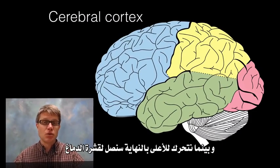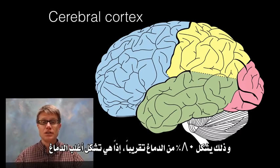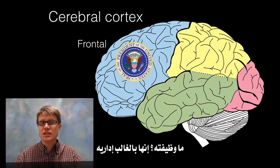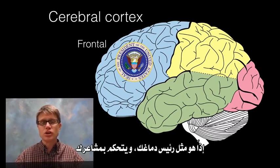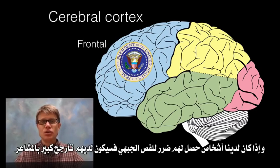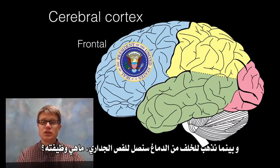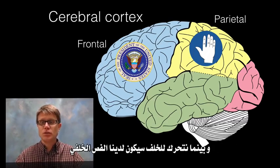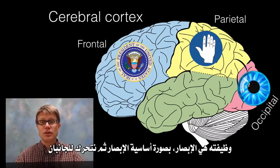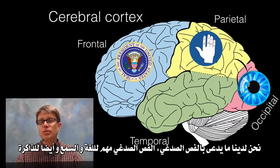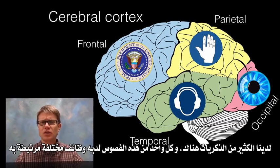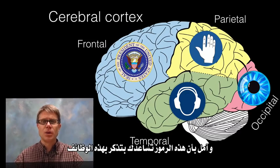Moving farther up we reach the cerebral cortex, which makes up about 80% of the brain. It's broken into four lobes. At the front is the frontal lobe — mostly executive function, the boss of the brain, handling emotional control. Moving back is the parietal lobe — sensation and reacting to your environment, with lots of sensory input neurons. At the back is the occipital lobe, primarily responsible for vision. On the side are the temporal lobes, important for language, hearing, and memory.